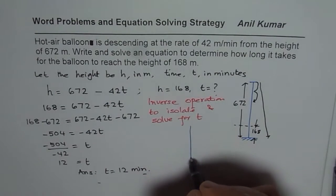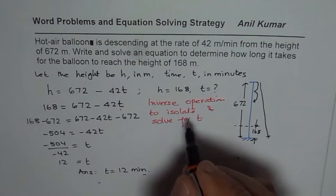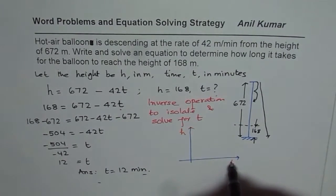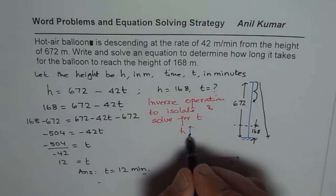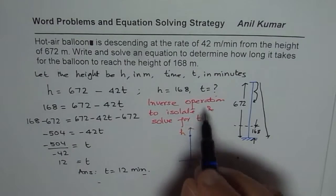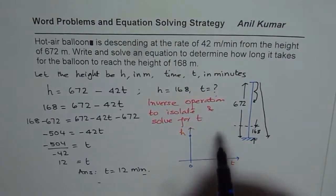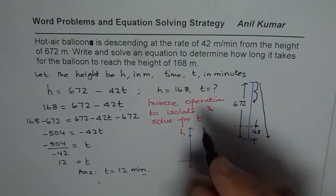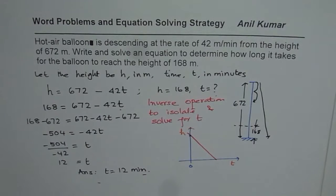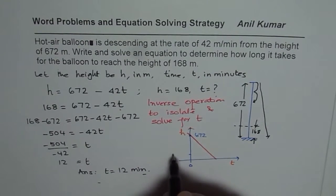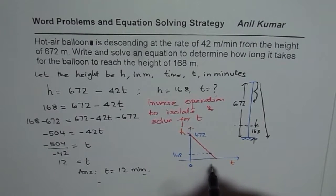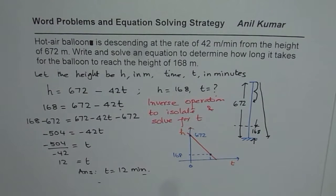If you are drawing a graph, the dependent axis is height, because height is dependent on time. You know that at T equals 0 the height is 672, and for every minute it goes down by 42, so you can plot a few points and join them to make a graph. At the height of 168, you draw a horizontal line, and wherever it meets the graph, the corresponding time gives you the answer. That is an alternate way of solving such questions using a graph.